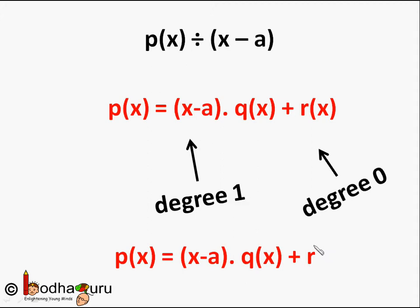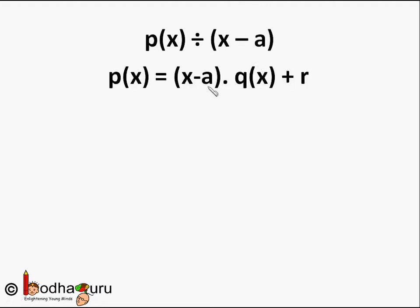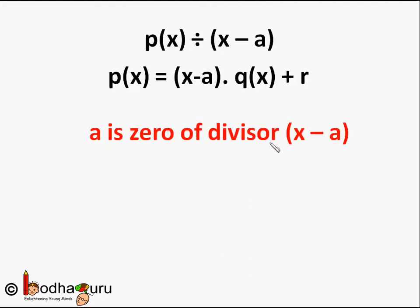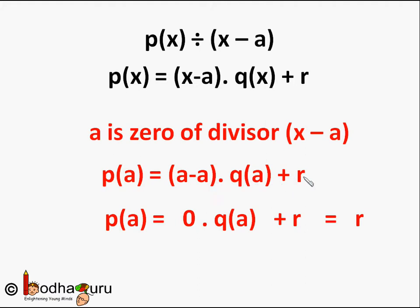So when p(x) is divided by x - a, we write p(x) = (x - a)·q(x) + r. Now, a is the zero of the divisor x - a, because setting x - a = 0 gives x = a. If we substitute x = a into the equation, we get p(a) = (a - a)·q(a) + r. Since a - a = 0, this simplifies to p(a) = 0·q(a) + r = r. Therefore, p(a) = r.